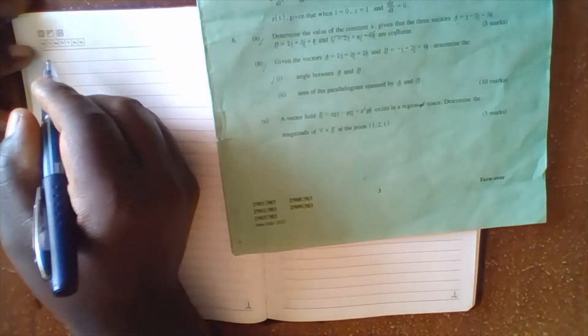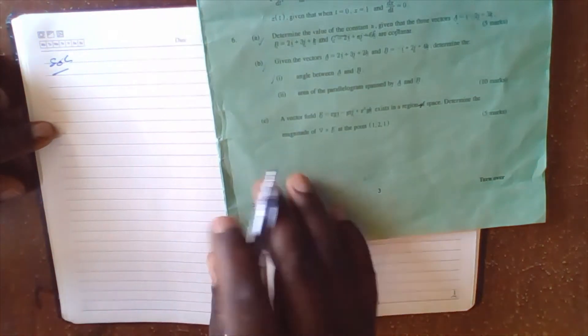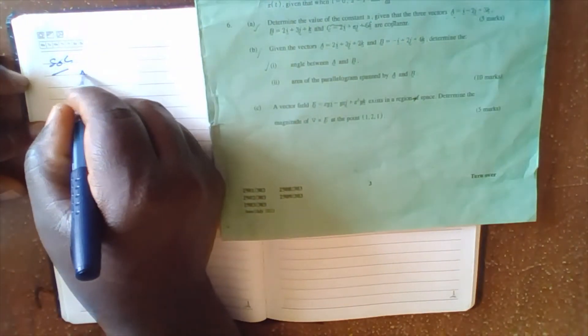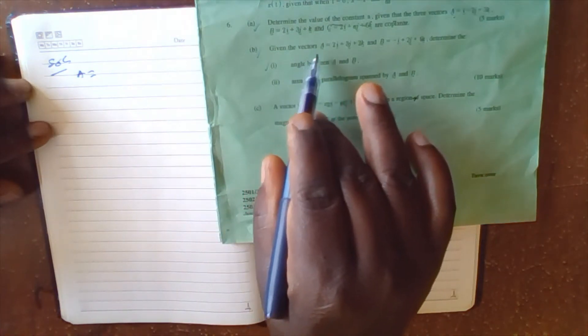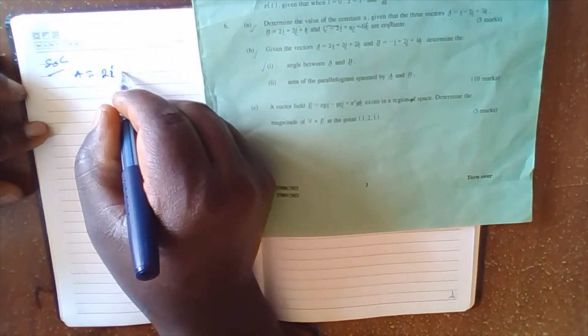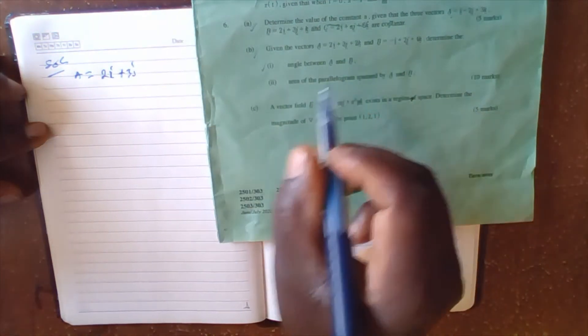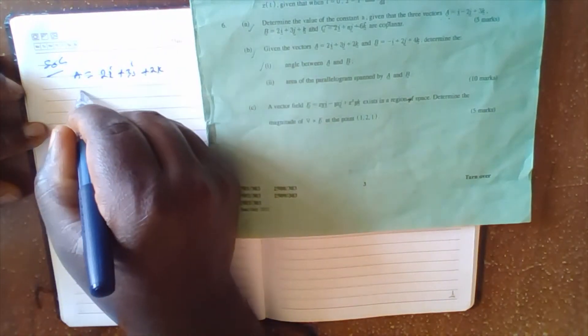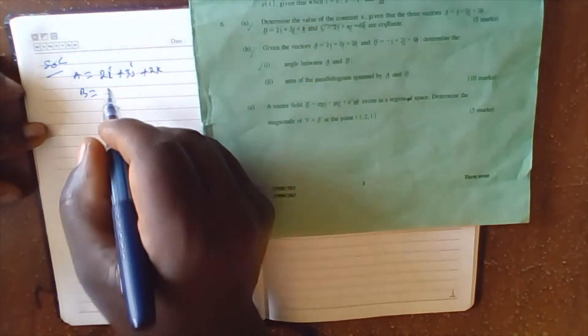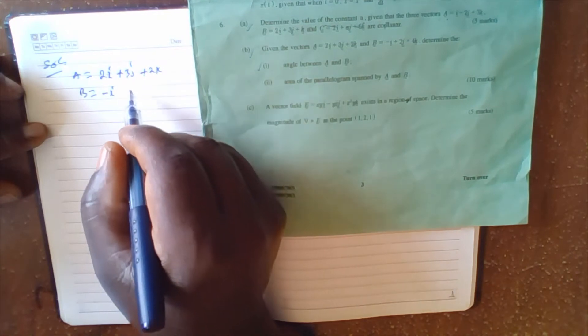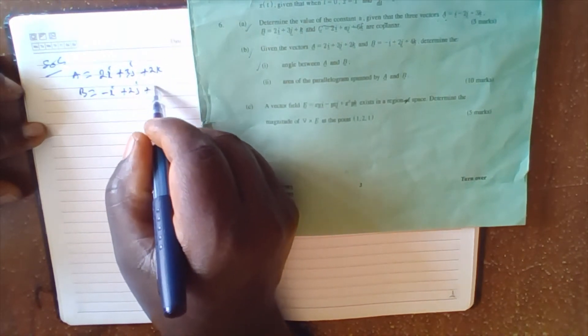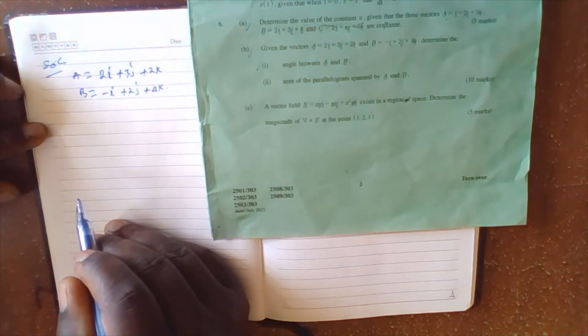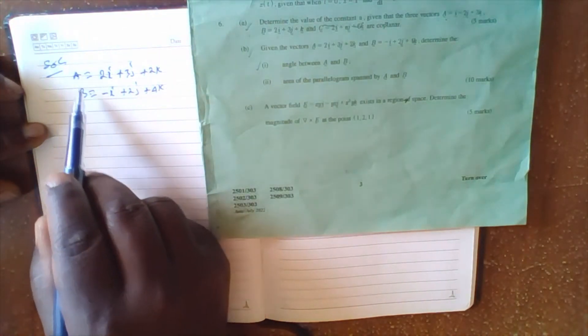Solution: We have the vectors where vector a is given by 2i plus 3j plus 2k, and vector b is given by negative i plus 2j plus 4k.